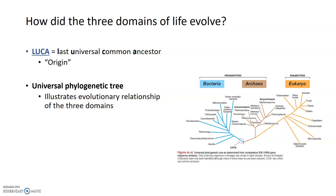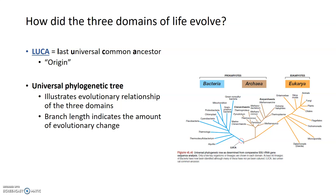When thinking about how these three domains evolved, the best way to visualize this is in a diagram called a universal phylogenetic tree, which you can see here on the right. The universal phylogenetic tree illustrates the evolutionary relationship between all three domains. What's important to note when reading a phylogenetic tree is that the branch length indicates the amount of evolutionary change or evolutionary differences between two organisms.